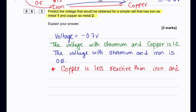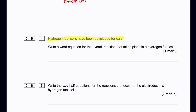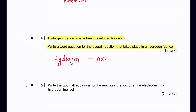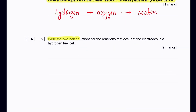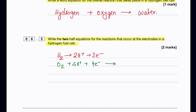Hydrogen fuel cells have been developed for cars. The word equation for the overall reaction is: hydrogen + oxygen → water. For the two half equations at the electrodes: hydrogen gives 2H⁺ ions and releases two electrons; on the other side, oxygen accepts those hydrogen ions and electrons to form water.